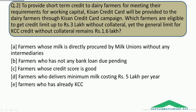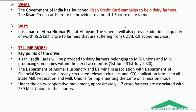Let's move on to question number 2, about the Kisan Credit Card campaign for dairy farmers. The question is: to provide short-term credit to dairy farmers for meeting their working capital requirements, Kisan Credit Cards will be provided through the KCC campaign. Which farmers are eligible to get a credit limit up to Rs. 3 lakh without collateral, given that the general KCC credit limit without collateral remains Rs. 1.6 lakh?